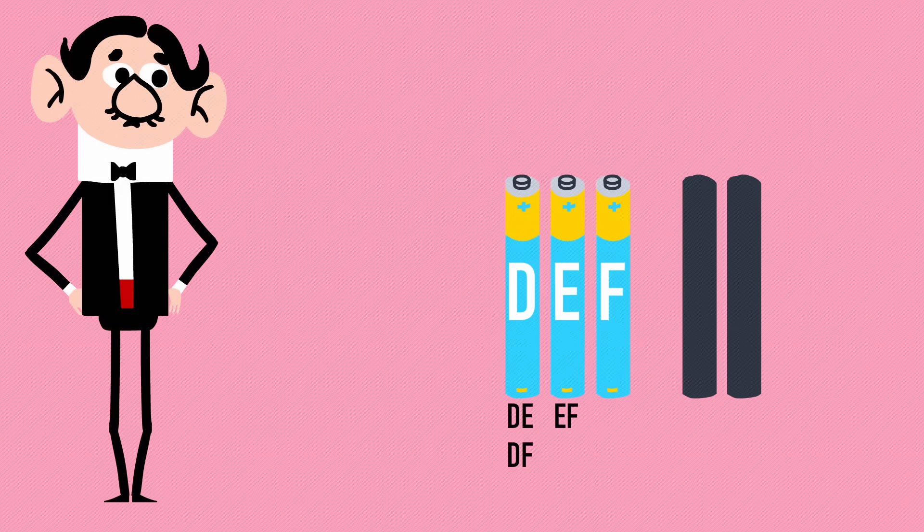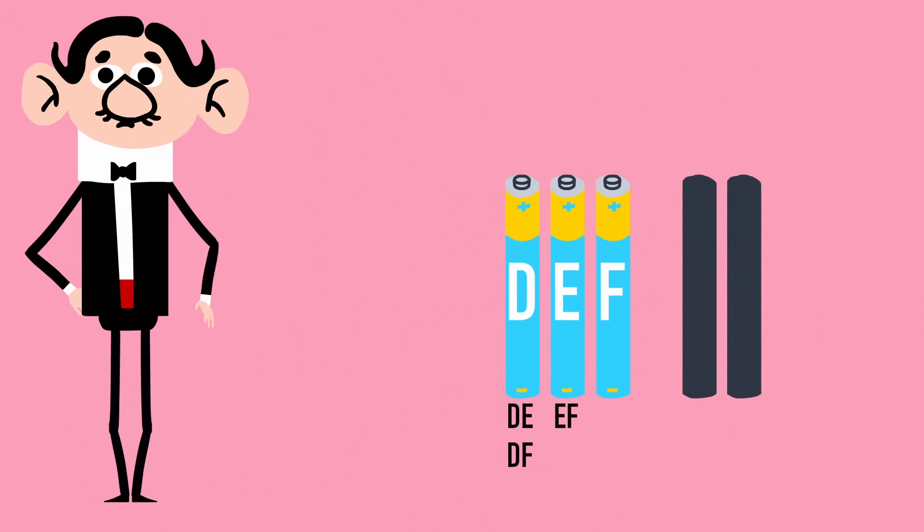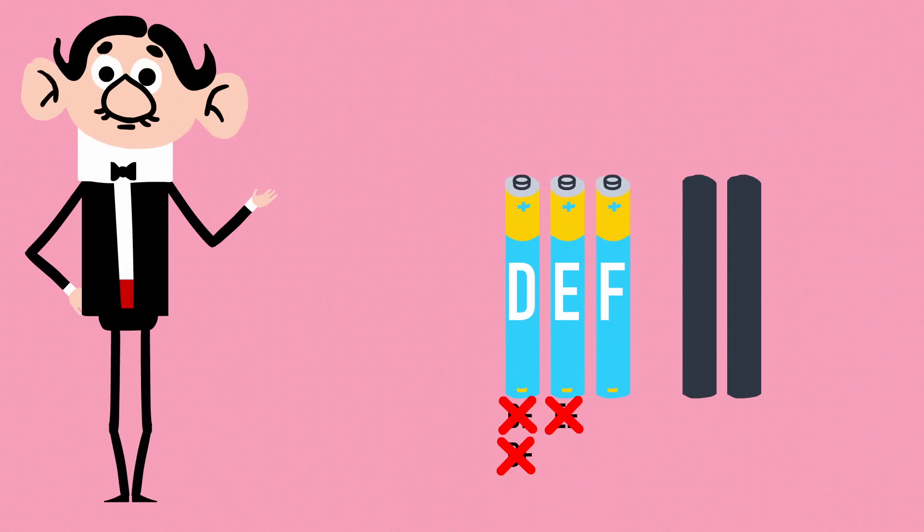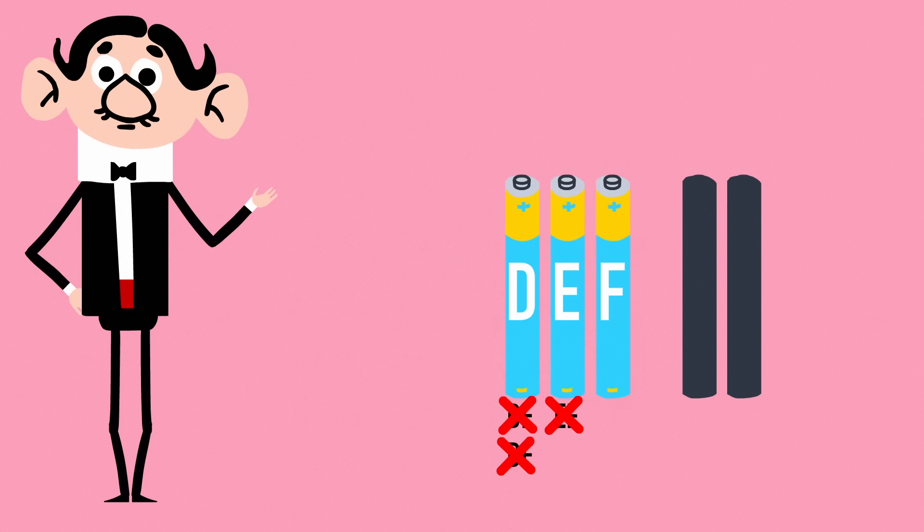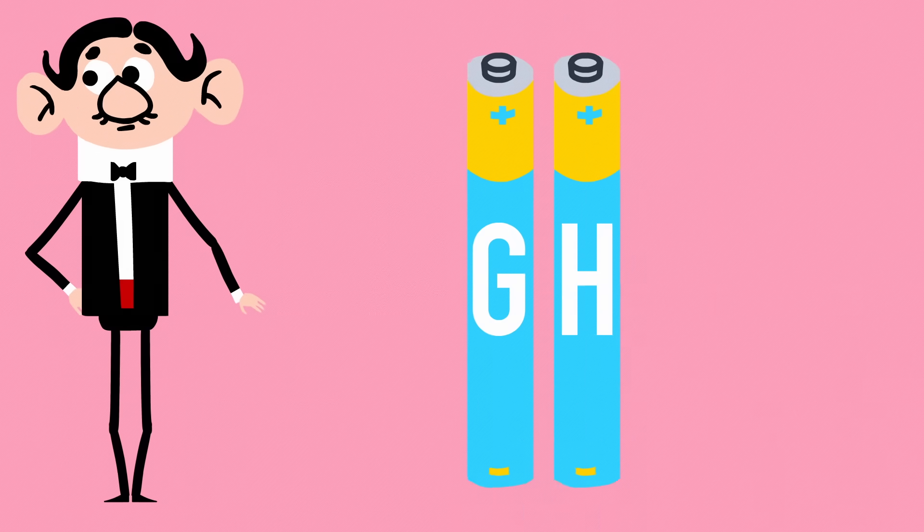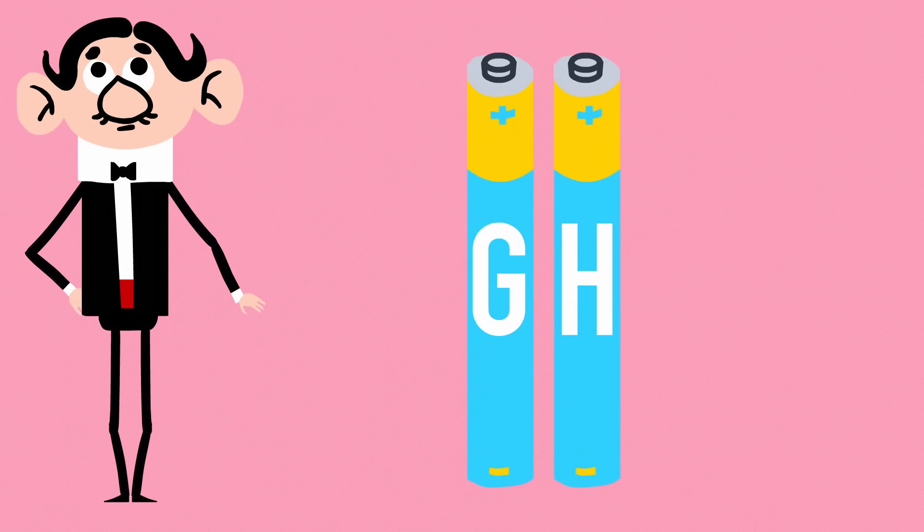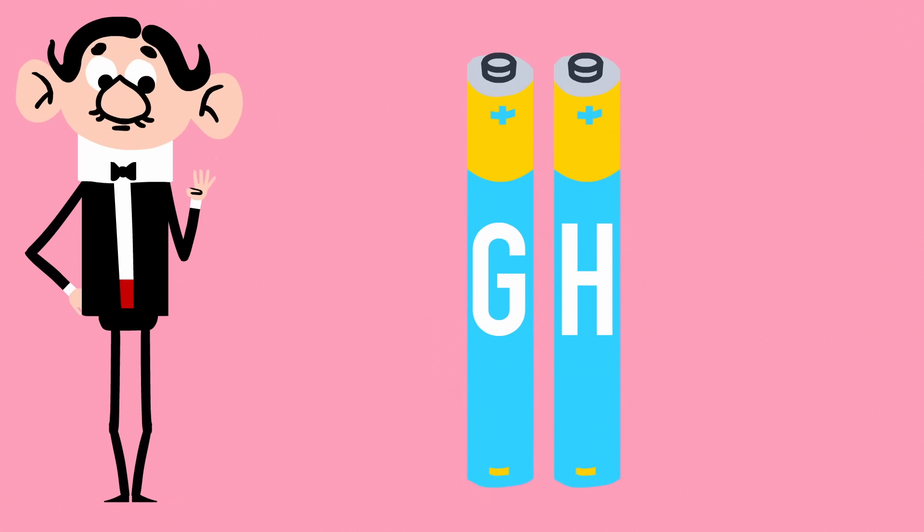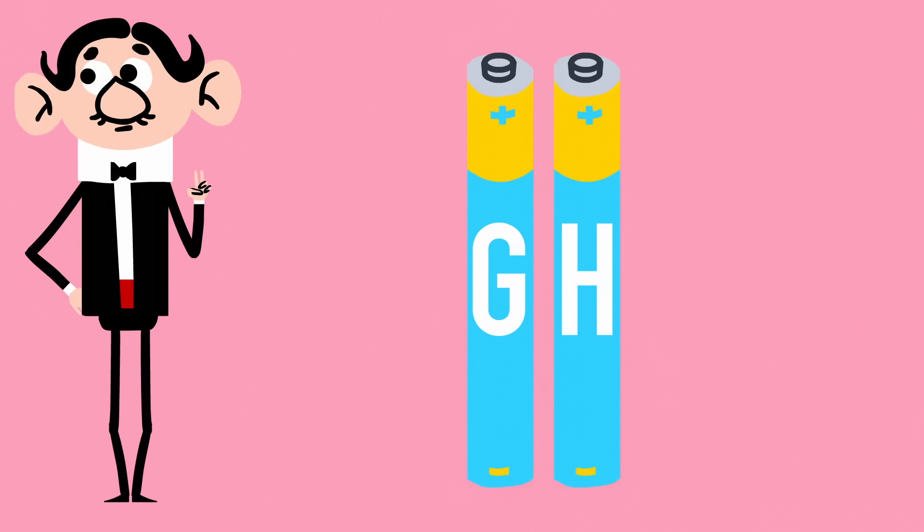Now you can set those three aside and repeat the process for another three batteries. You might get a match, but if every combination fails again, you'll know this set can have no more than one good battery. That would leave only two batteries untried. Since there are four good batteries in total, and you've only accounted for two so far, both of these remaining ones must be good.